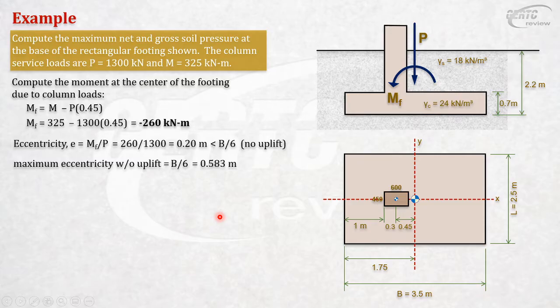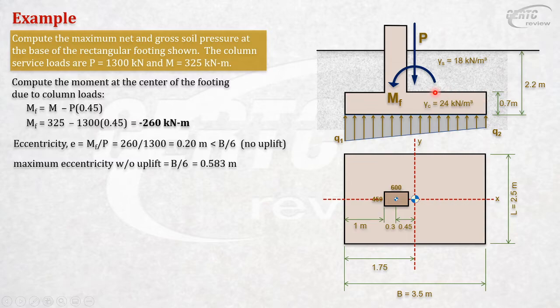No uplift means no tension. By the way, we're only considering the load from the column here - we haven't included the weights of soil and concrete yet. If we don't include those, we get net pressure - net pressure from column load only. Since there's no uplift, the stress diagram is trapezoidal, with stress obviously larger here than here. If there were uplift, it would have tension and we'd compute differently.